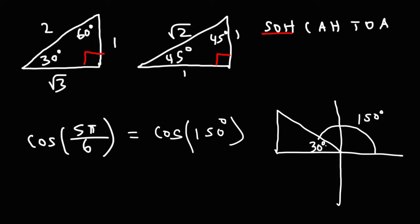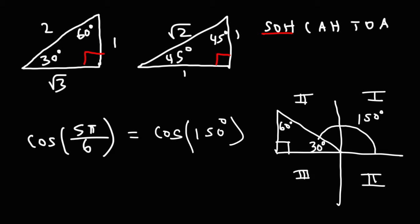Drawing a right triangle, we know this angle is 90 and this is 60. We incorporate signs based on the quadrant. In quadrant 2, x is negative, so this side is negative square root of 3. Y is positive, so this side is 1. The hypotenuse is always positive, so it's 2.